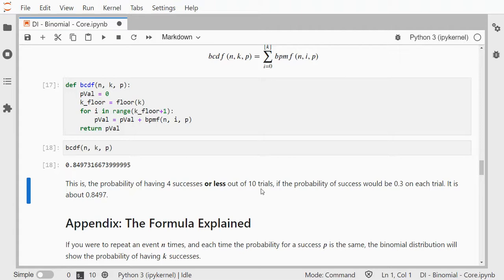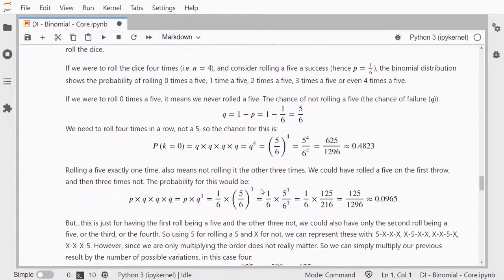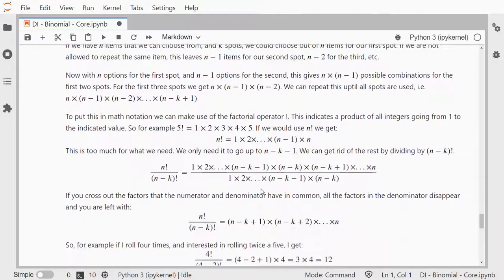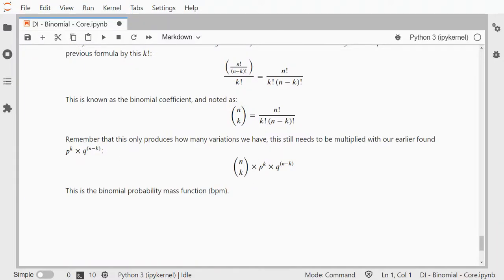And that's how you can create your own binomial distribution functions using Python core only. These can probably heavily be optimized, and probably if you use a library like SciPy or at least Math, it goes a lot faster, but it can be done. In the appendix, I'll leave a link to this notebook in the description below, there's actually a small explanation of how those formulas came to be, so if you're interested in that, you can read that, and I hope this video was helpful. Thank you for watching.